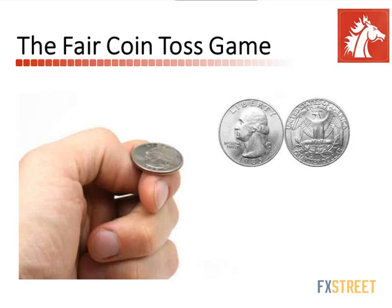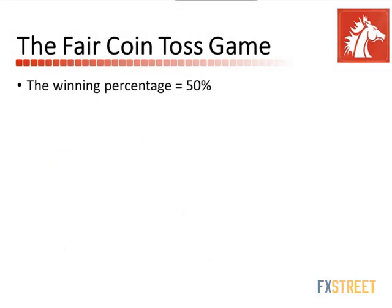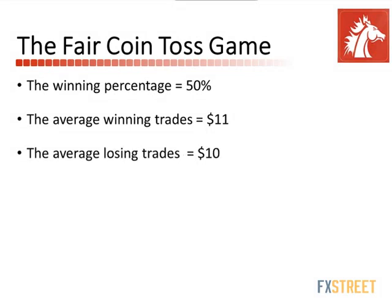Let's set up some rules and boundaries for this game. We know for certain, being it is a fair coin, it's 50-50. Every single time when you flip the coin and it's heads, I give you $11 — so your average winning trade is $11. And every single time you flip tails, you lose $10 — I take $10 away from you. So it's a fair coin of 50-50: flip heads, I give you $11; flip tails, I take $10 away from you.